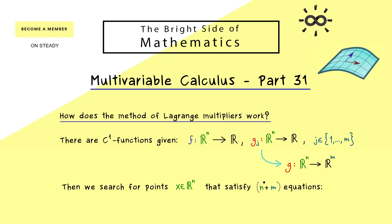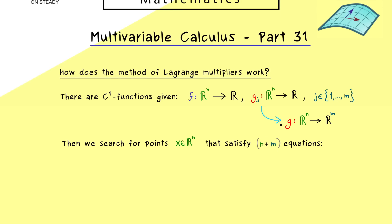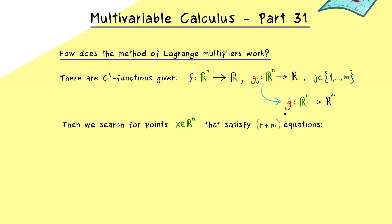First we have m equations for the constraint. So we want that g of x is equal to zero. And there we actually have the zero vector in Rm on the right hand side. So we have m equations here. And on the other hand, as you already know, we have this gradient equation.